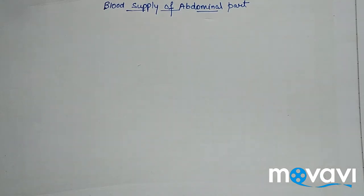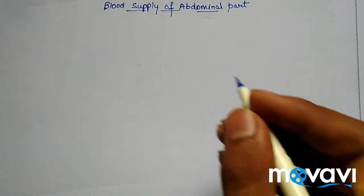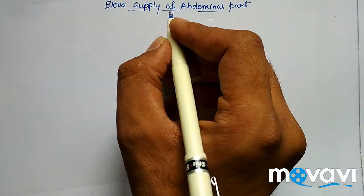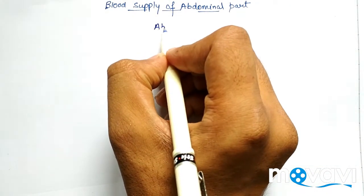Hello friends, now we are going to study the blood supply of the abdominal part. The abdominal part — we can say the foregut, midgut, and hindgut — are supplied by three separate branches arising from the abdominal aorta, so we are going to discuss all of these.